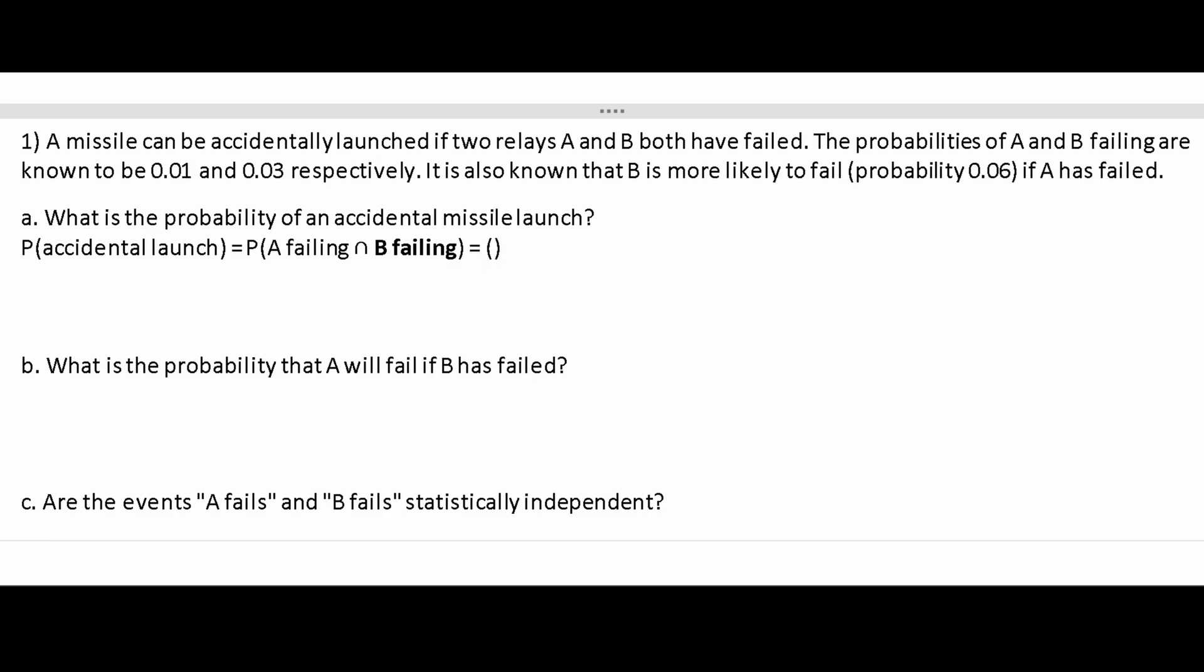What are the two different possibilities for this? This could be the probability of B failing because of A failing. Or we can have this be multiplied because these are two separate things: the probability of A failing.